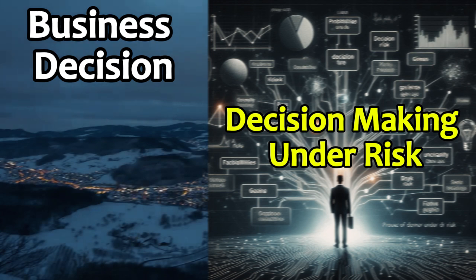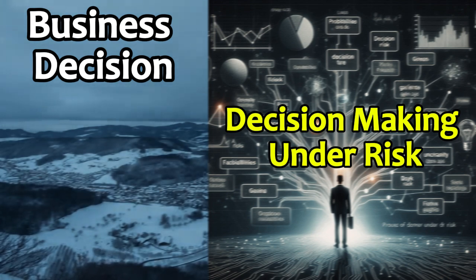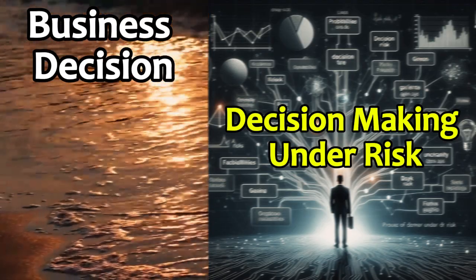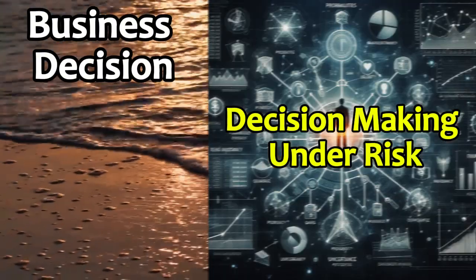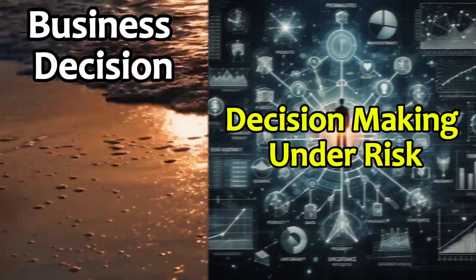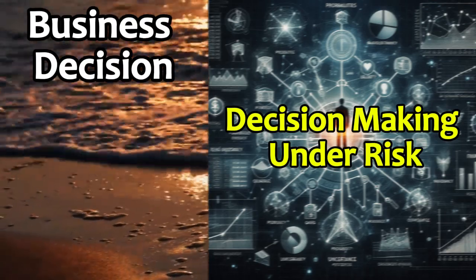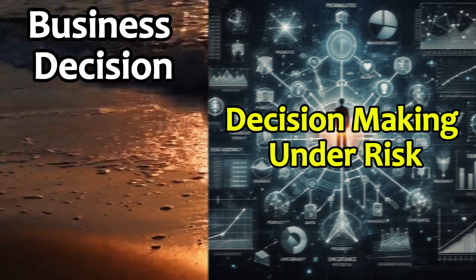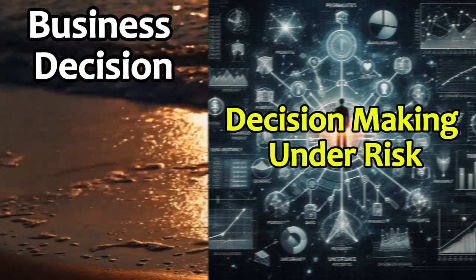The maximum probability criterion requires the decision-maker to choose the alternative that is best for the most likely state of nature, rather than calculating across all states of nature. It states that the decision-maker should ignore all possible events except the one most likely to occur, and select the best possible result — maximum gain or minimum loss — in the given circumstances. While this criterion has the advantage of simplicity, ignoring information related to less likely states of nature makes it a weaker criterion, since a low-probability state of nature can still occur.